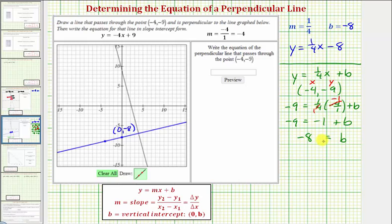So whatever approach we take, the equation for the perpendicular line passing through the point negative four comma negative nine is y equals one fourth x minus eight. I hope you found this helpful.